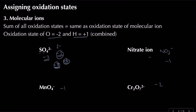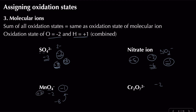For nitrate, oxygen is −2 and there are three of them: 3 × −2 = −6. To get from −6 to −1, nitrogen must be +5. So nitrogen is +5 and oxygen is −2, giving −1 overall for nitrate. For manganate with an overall state of −1, four oxygens give −8, so manganese must be +7 to reach −1.